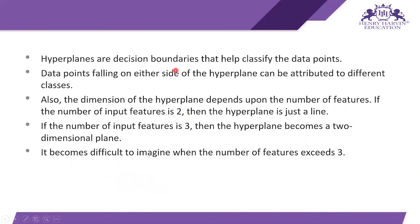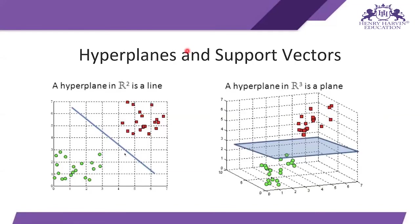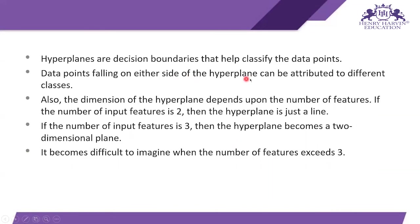Hyperplanes are decision boundaries that help classify the data points — data points falling on either side of the hyperplane are attributed to different classes. The dimension of the hyperplane depends on the number of features: if the number of input features is 2, the hyperplane is a line (one dimension); if the number of features is 3, the hyperplane becomes two-dimensional. When the number of features exceeds 3, it becomes difficult to visualize.